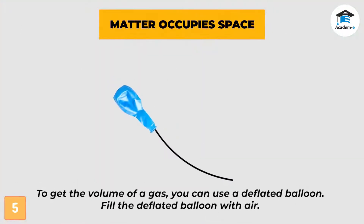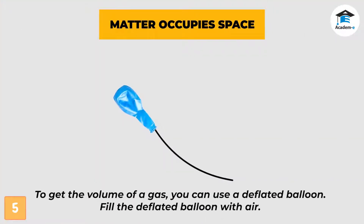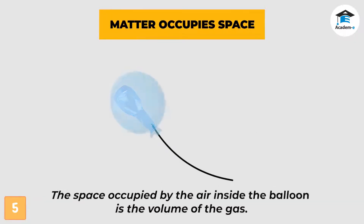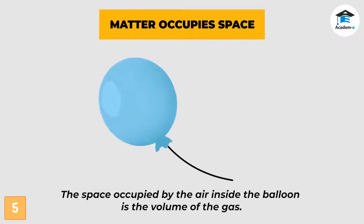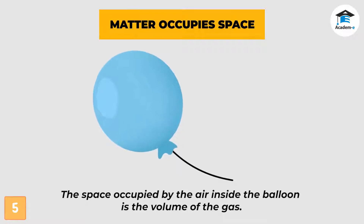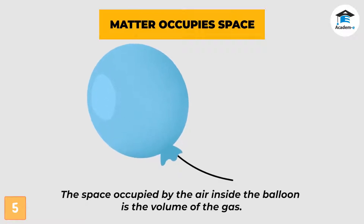To get the volume of a gas, you can use a deflated balloon. Fill the deflated balloon with air — the space occupied by the air inside the balloon is the volume of the gas.